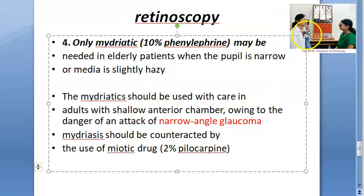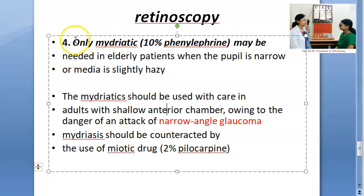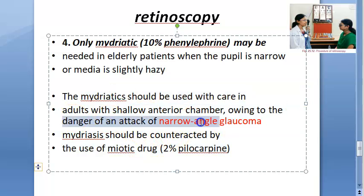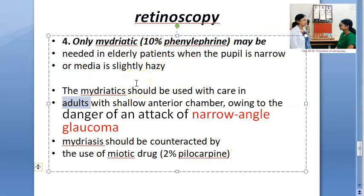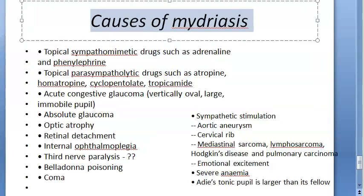There is something called the mydriatic test using phenylephrine for angle-closure glaucoma, but it seems this is no longer commonly used. For retinoscopy, a cycloplegic is usually preferred to spasm accommodation and check for hypermetropia, though in a few cases only a mydriatic may be needed. Importantly, mydriatics should be used with great care because they can trigger an attack of narrow-angle glaucoma. In adults with a shallow anterior chamber, they can precipitate a narrow-angle glaucoma attack, so a miotic like pilocarpine is kept ready to counteract the action.